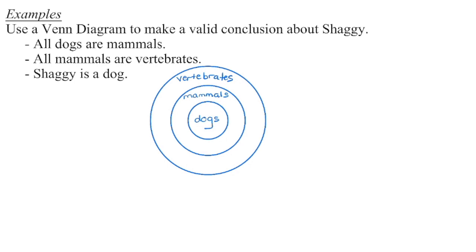And then our final statement says Shaggy is a dog. Well, here's my dog circle. So we're going to plunk Shaggy into the dog circle. And then we have to come up with a conclusion about Shaggy. By referring to our diagram, we can see that if Shaggy is a dog, Shaggy will also be a mammal, and Shaggy will have a vertebrae.